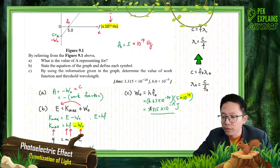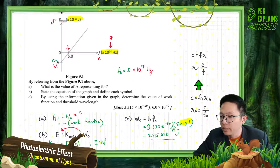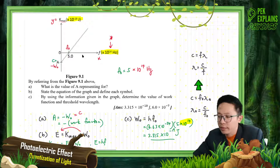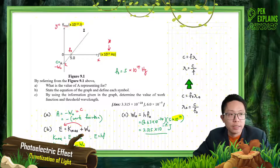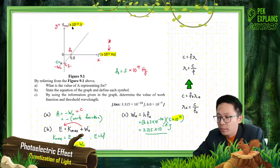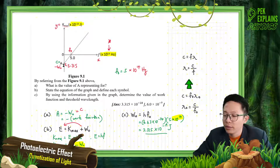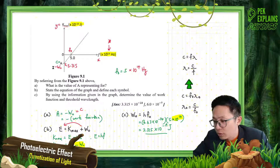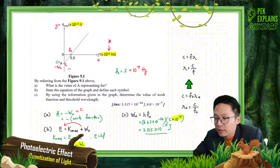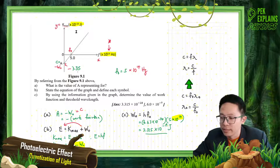If you want to write on this graph, the exponent negative 19 is already at the axis label at the top. So the A value on the graph will just be written as negative 3.315.